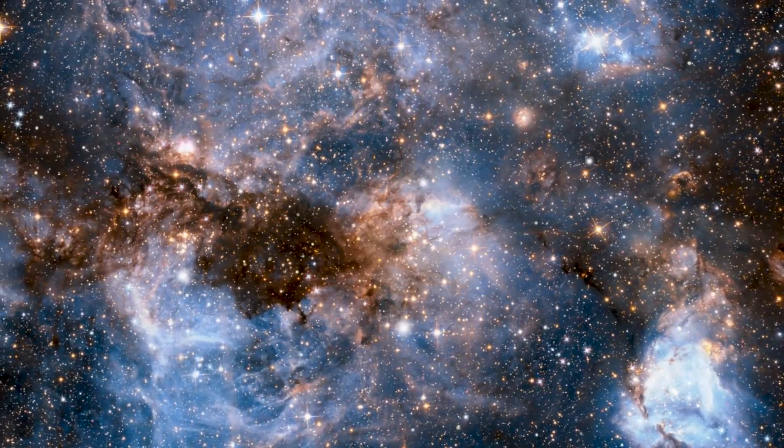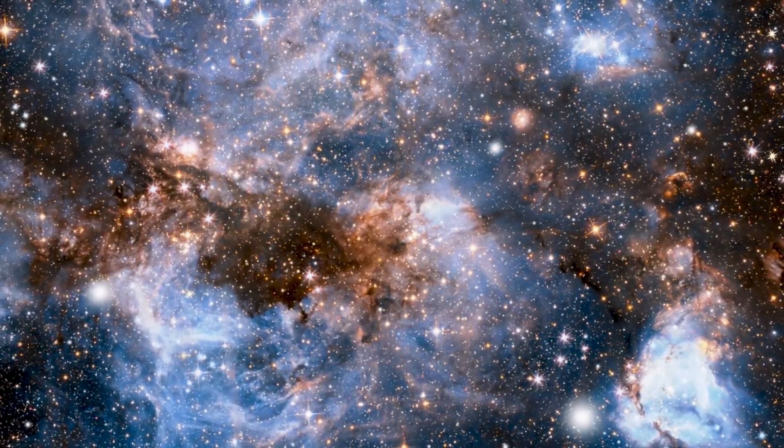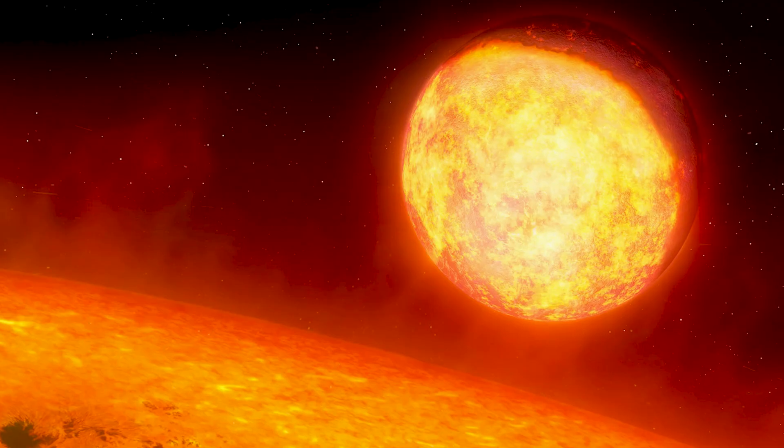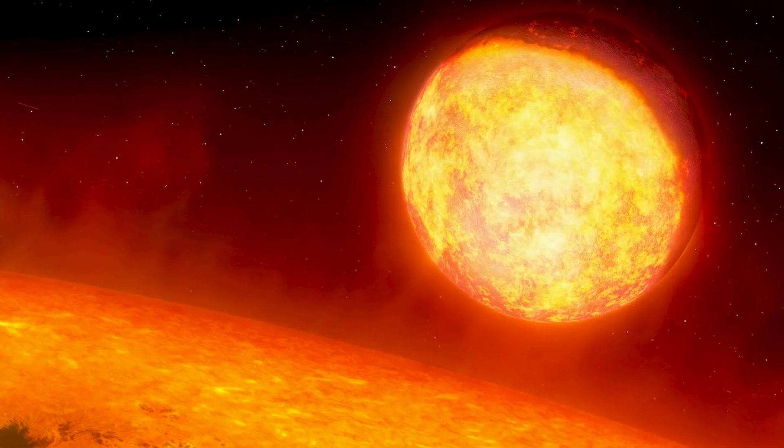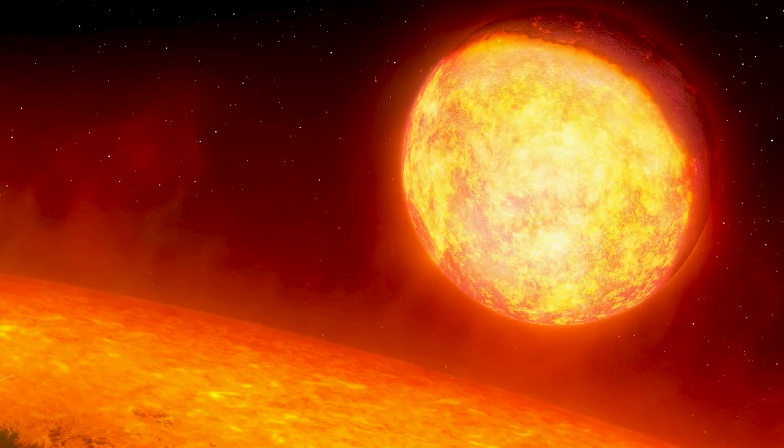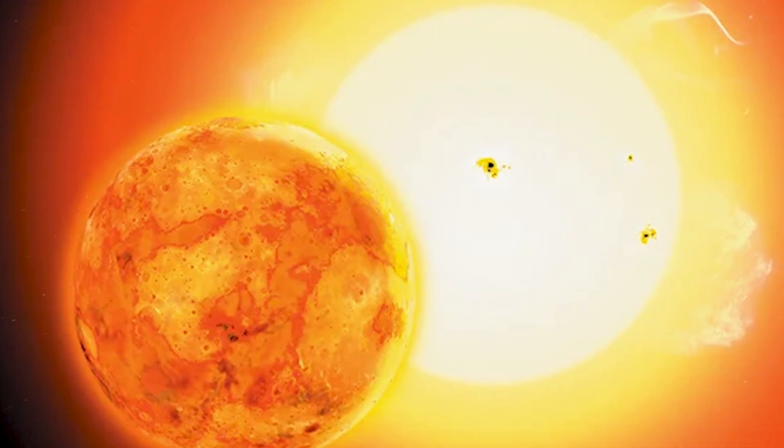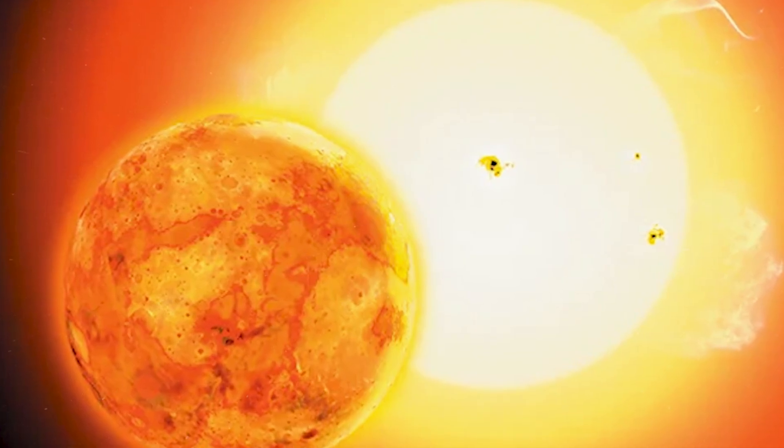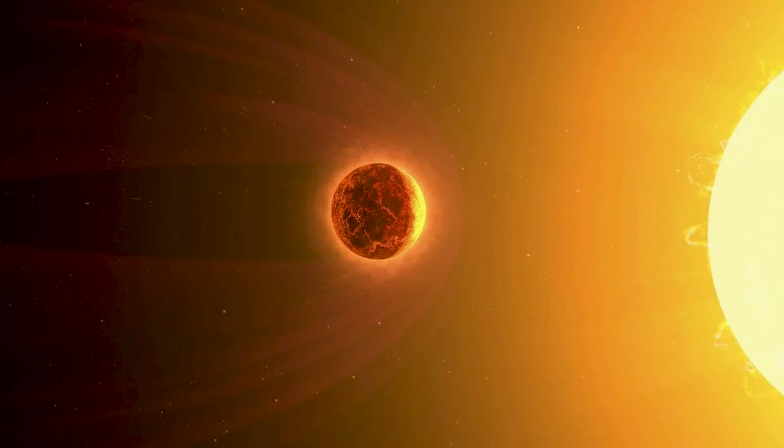This realization reshapes how we think about cosmic permanence. And suddenly, Webb's discoveries take on a new meaning. Take that lava world, a planet so close to its star that its surface may be an ocean of molten rock. For years, scientists assumed such worlds would be airless, stripped bare by radiation.